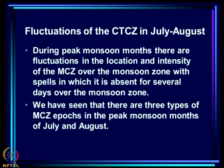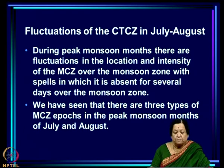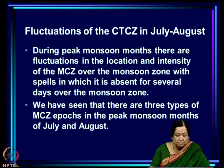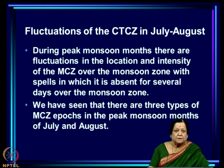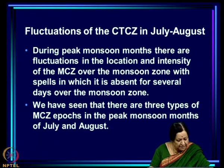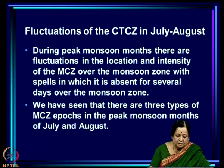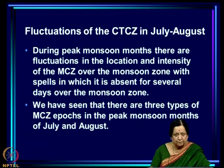Let us now consider fluctuations of the CTCZ in July-August, which are the peak monsoon months. During peak monsoon months there are fluctuations in both the location and the intensity of the maximum cloud zone over the monsoon zone, with spells in which it is absent for several days — these are the cloud-free spells.